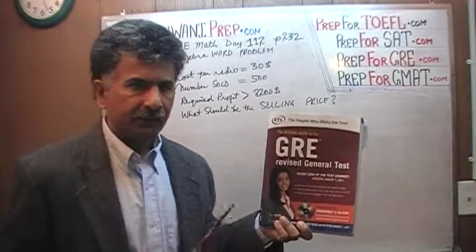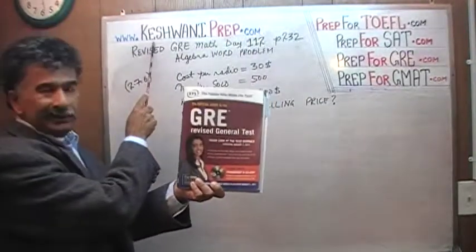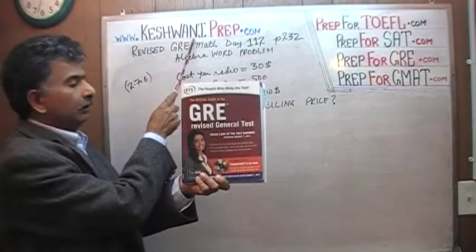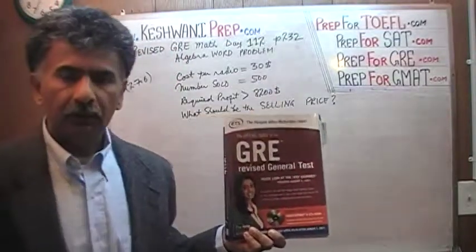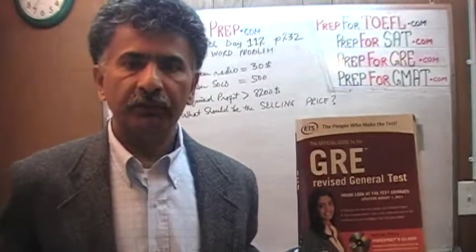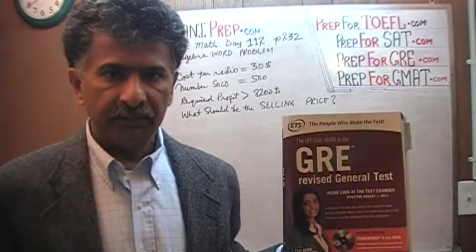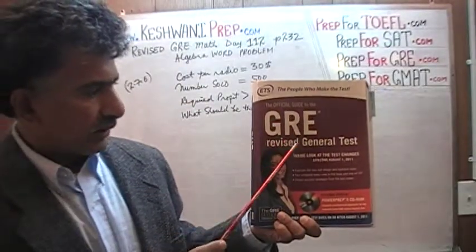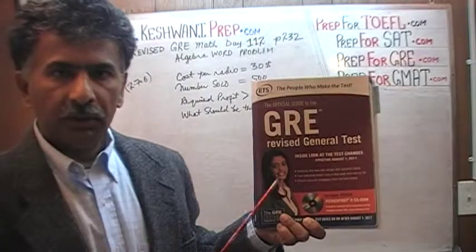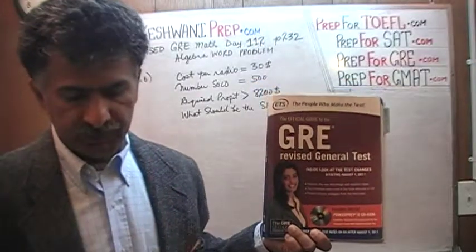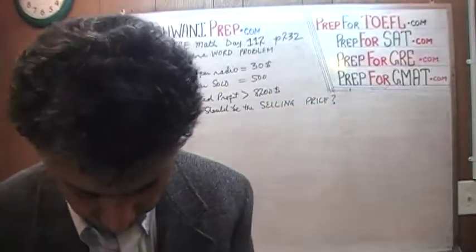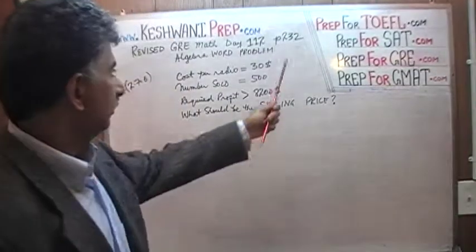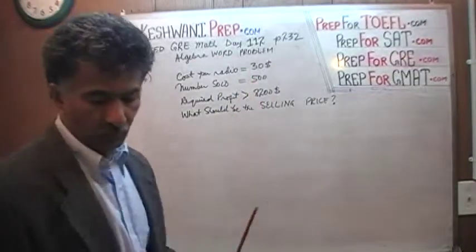Hello, my name is Keshwani — that's K-E-S-H-W-A-N-I. We are here because we want to prepare for the GRE. We have been solving GRE math questions out of this book here, the official guide to the GRE revised general test. If you do not own this book already, purchase one immediately — you're going to need it. The problem I'm about to solve is found on page 232, and today is lesson number 112.